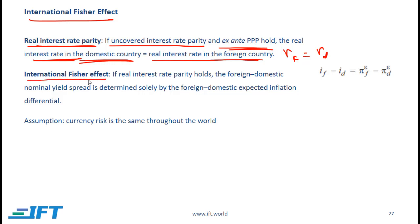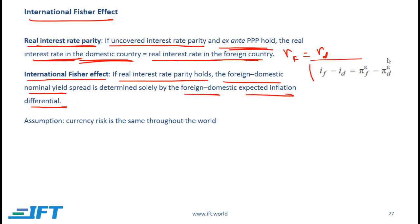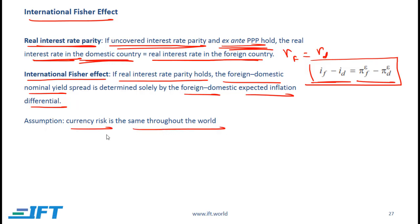The international Fisher effect says that if real interest rate parity holds — meaning we have the same real interest rates across countries — then the foreign-domestic nominal yield spread, which is the differential in interest rates, is determined solely by the foreign-domestic expected inflation differential. So the difference between interest rates equals the difference between inflation rates. For this to hold, real interest rate parity must hold, which in turn requires both uncovered interest rate parity and ex-ante PPP to hold. An assumption here is that currency risk is the same throughout the world, but in reality different currencies carry different risk, and therefore the international Fisher effect does not always hold.